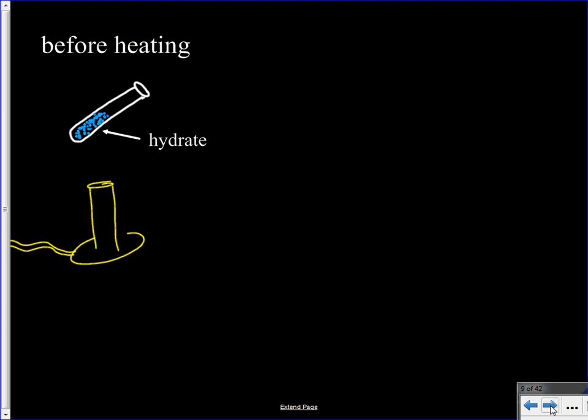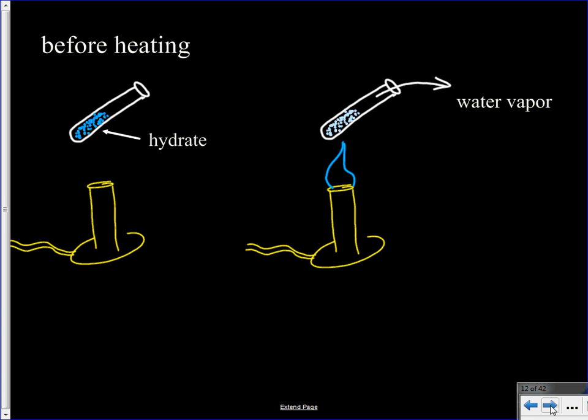Then what we're going to do is we are going to heat that hydrate over a burner flame. As we start to do that, one thing we're going to notice is there's going to be a color change in that salt. What's going on here is that as we're heating it up, we are forcing the water molecules out of the crystal structure. So we're going to be driving off the water. The water vapor or the water that was in the crystal is going to be leaving in the form of water vapor and should be exiting the test tube.